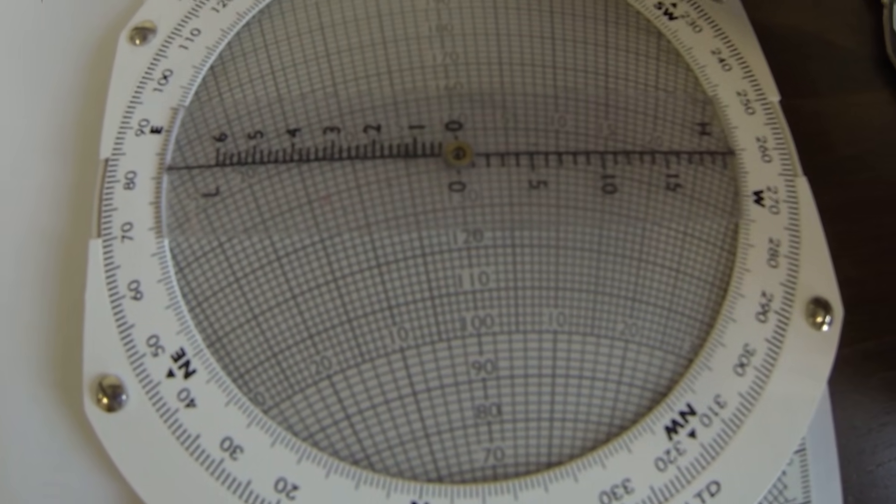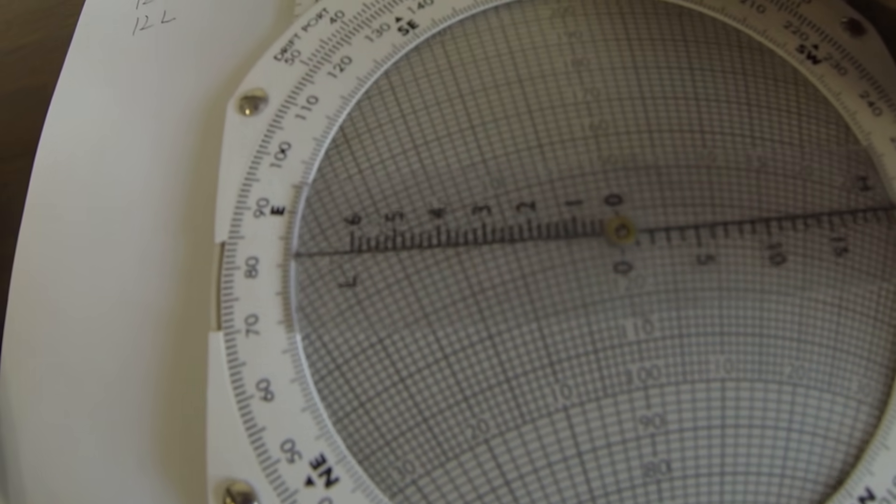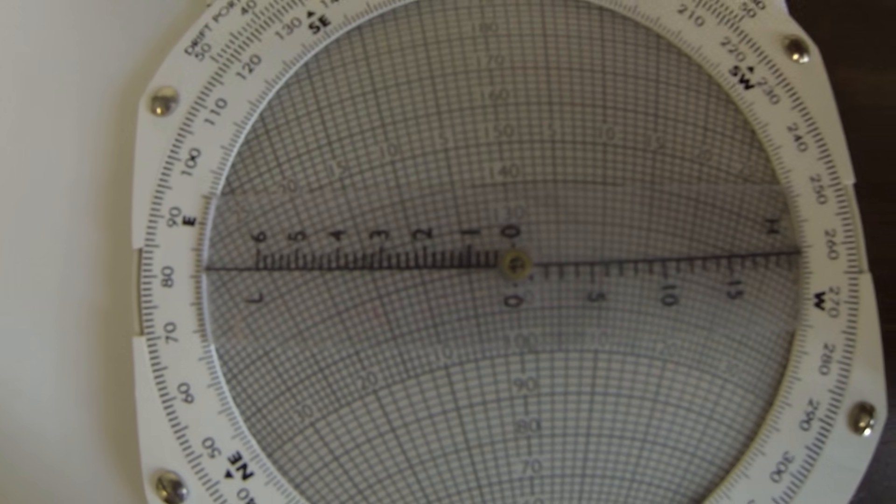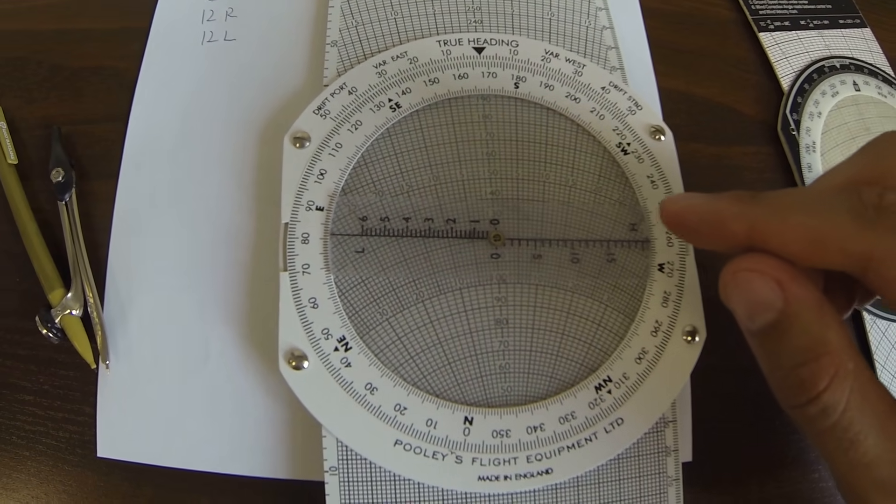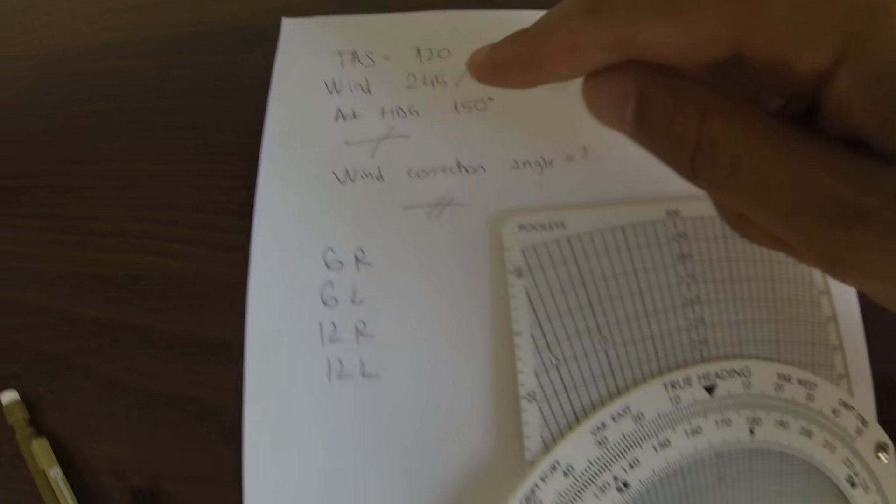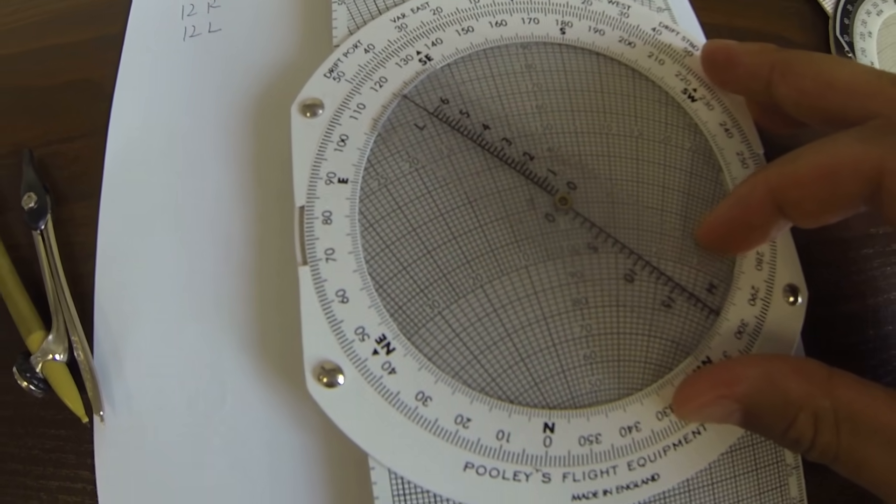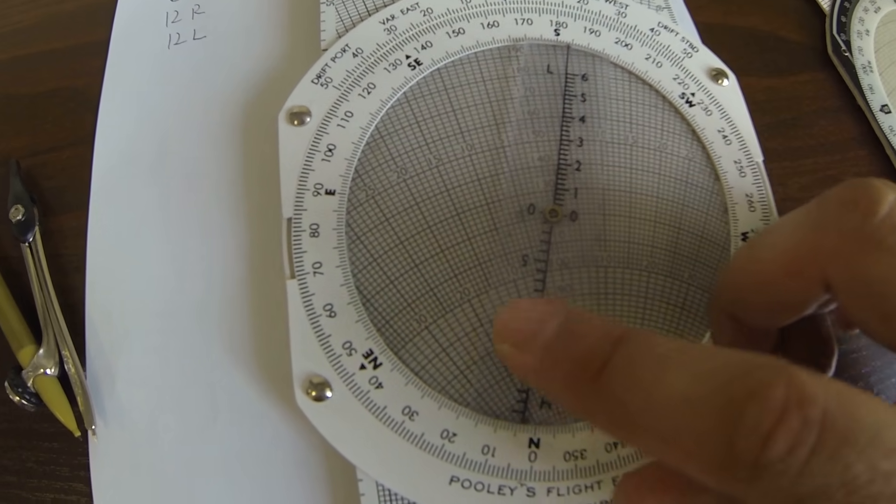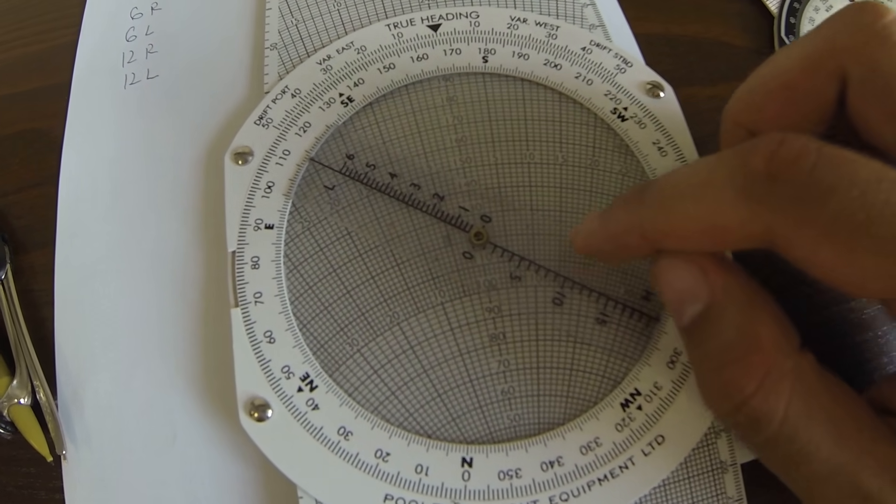You can see here it's 120, and then you have to put the wind. This is the CRP with the wind arm, it's very very useful. Initially I didn't know how to use it and I felt it's not good.